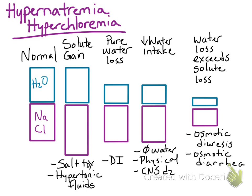Examples of osmotic diuresis include mannitol administration or glucose and urea in diabetic animals. An example of osmotic diarrhea is giving a laxative to an animal. So those are the four causes of hypernatremia and hyperchloremia: solute gain, pure water loss, decreased water intake, or water loss that exceeds solute loss.